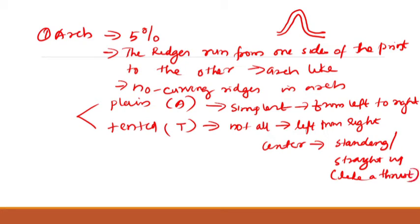To summarize arch: it appears in about 5% of the population; ridges run from one side to the other in an arc-like fashion with no recurving ridges. Plain arch is the simplest form with all ridges flowing left to right, while tented arch (T) has ridges that form a definite angle or thrust in the center.